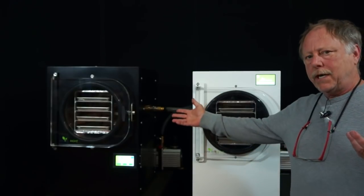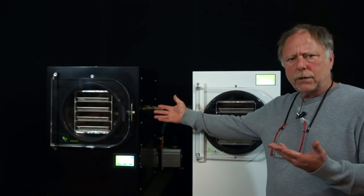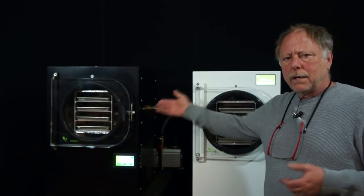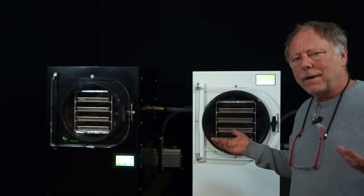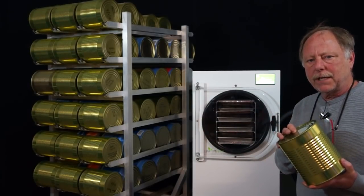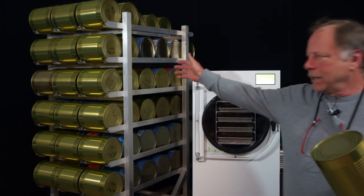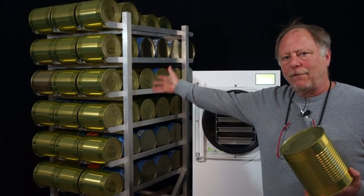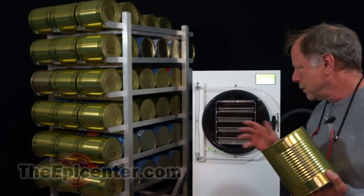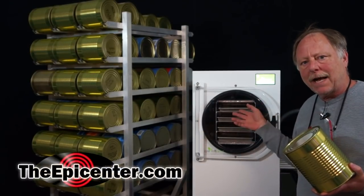So the old machine, because the batches took longer, typically I'd get about five done per week. Now with this one, you get an extra batch every week. Each batch represents about two of these number 10 cans. And over a year's time, that's 104 extra number 10 cans worth of food that you can process just because this machine is faster.